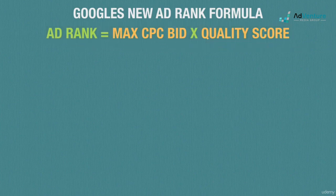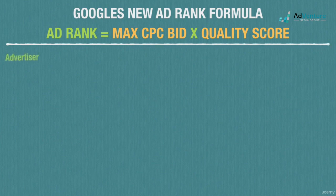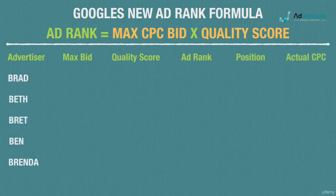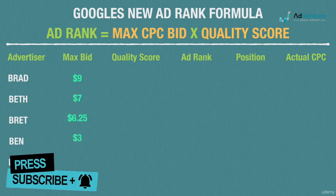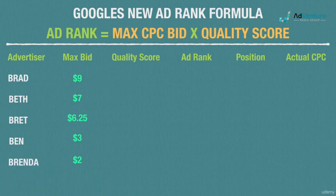Let's create a sample auction with some of our old friends, but now we'll add a couple of women into the auction. In this example, we're going to have Brad, Beth, Brett, Ben, and Brenda all bidding on the same keyword. There are only four available ad slots on this particular search results page, so only four of these five advertisers are going to win an ad spot. Brad sets his max CPC bid at $9, Beth sets hers at $7, Brett is willing to pay no more than $6.25, Ben's max is $3, and Brenda is the most frugal bidder at $2.